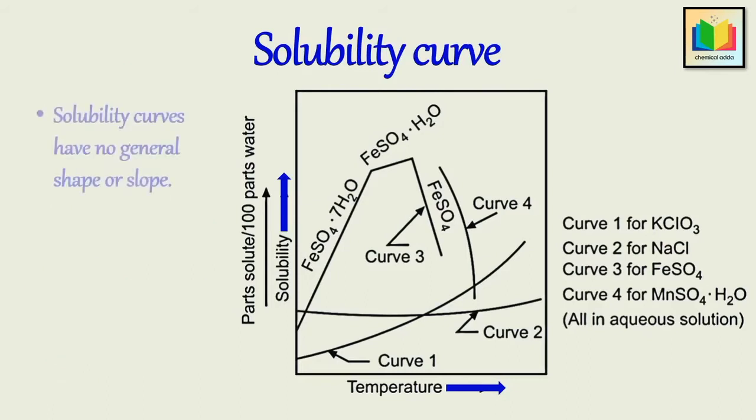Solubility curves have no general shape or slope. Because, as we know, the solubility of solutes in a given solvent may increase with temperature, may decrease with temperature, or remains more or less constant with temperature. That's why solubility curves have no general shape or slope.